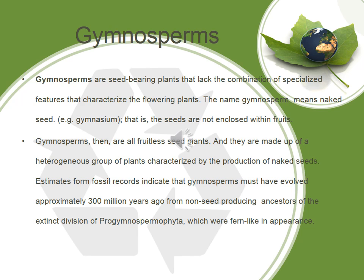Gymnosperms are seed-bearing plants that lack the combination of specialized features that characterize flowering plants. The name gymnosperm means naked seed — that is, the seeds are not enclosed within fruits. Gymnosperms are all fruitless seed plants, made up of a heterogeneous group of plants characterized by the production of naked seeds. Fossil records indicate gymnosperms evolved approximately 300 million years ago from non-seed-producing ancestors of the extinct division Progymnospermophyta, which are fern-like in appearance.